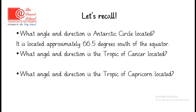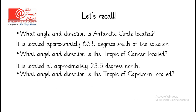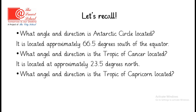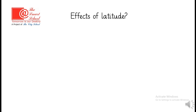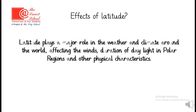What angle and direction is the Tropic of Cancer located? It is located at approximately 23.5 degrees north. What angle and direction is the Tropic of Capricorn located? It is located at approximately 23.5 degrees south. As we already know the lines of latitude, let's discuss the effects of latitude.